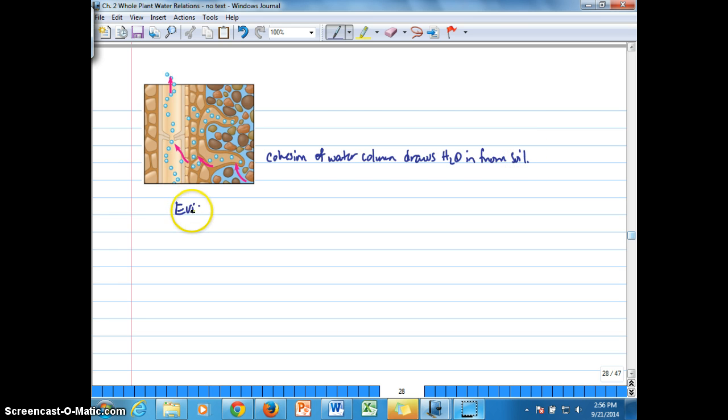So what is the evidence that we see to support this cohesion-tension theory of sap ascent? The evidence of the theory. First of all, water potentials measured in the soil are, as long as water's being transported up through the plant, it's always going to be greater than leaf water potential. So that's one form of evidence. Again, water's moving down a water potential gradient.